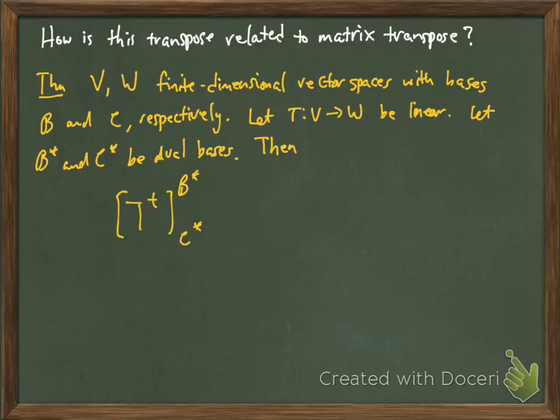So then the claim is that if I look at T transpose, that linear transformation, and I look at the matrix representation for that linear transformation relative to C star and B star, this is exactly equal to the transpose of the matrix representation of the linear map T relative to bases B and C. So it relates the transpose linear transformation and the transpose of the matrix representation.